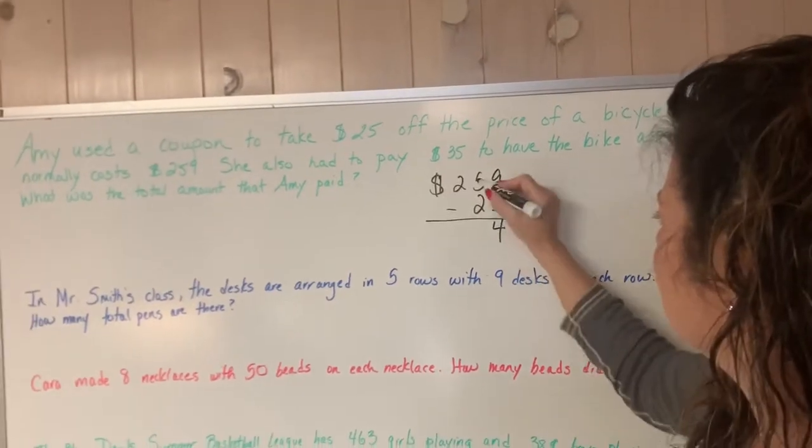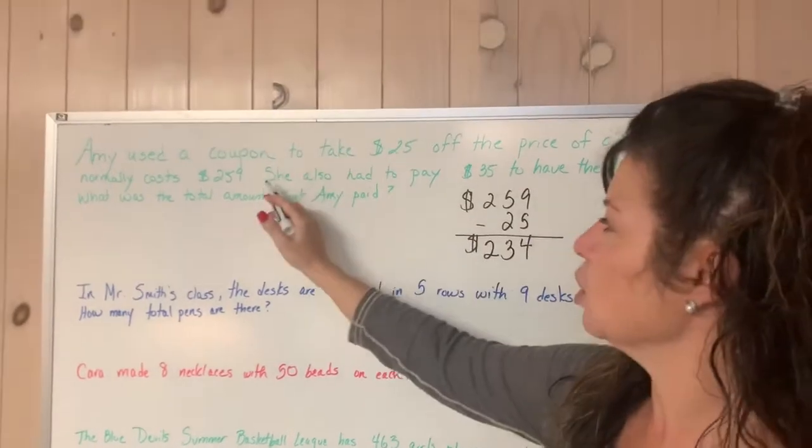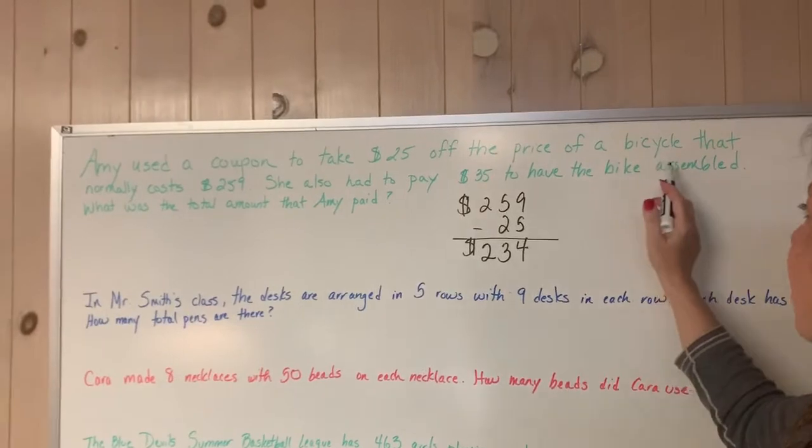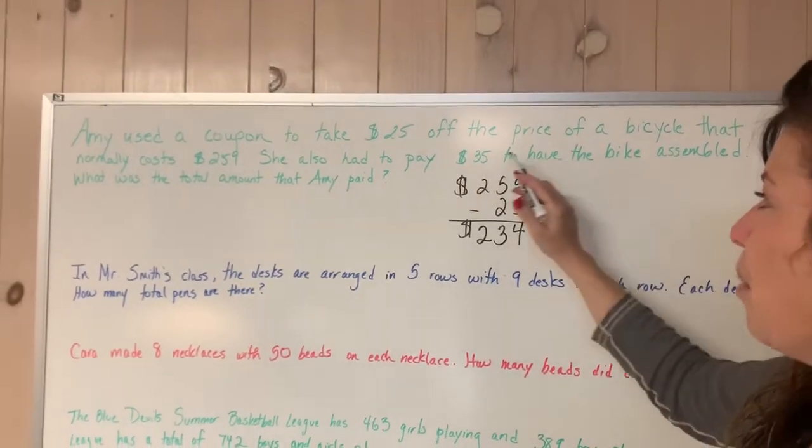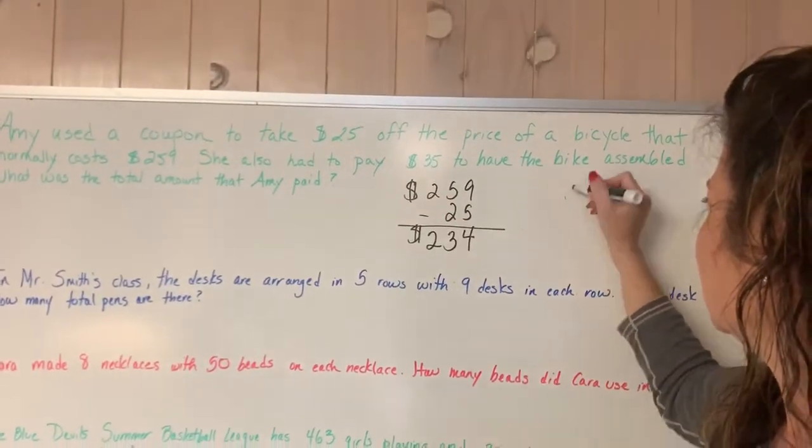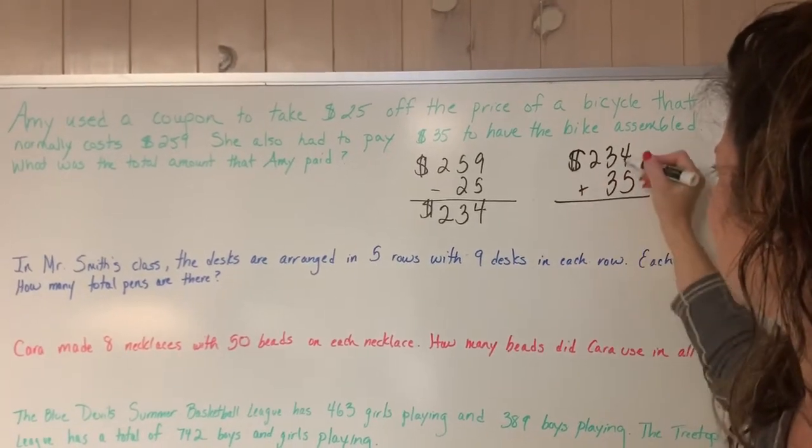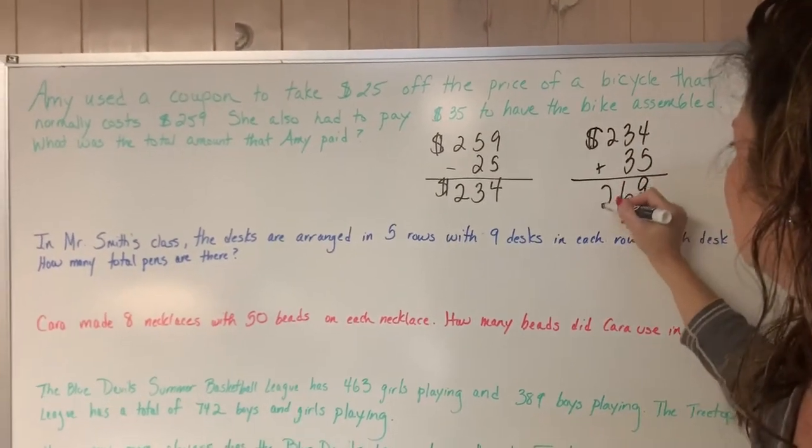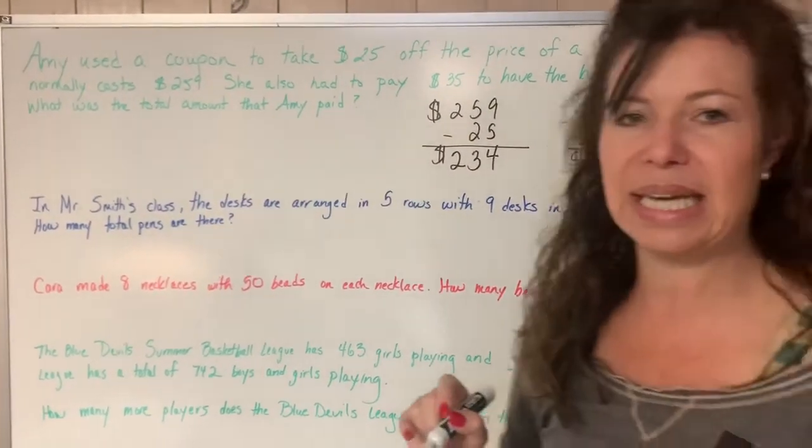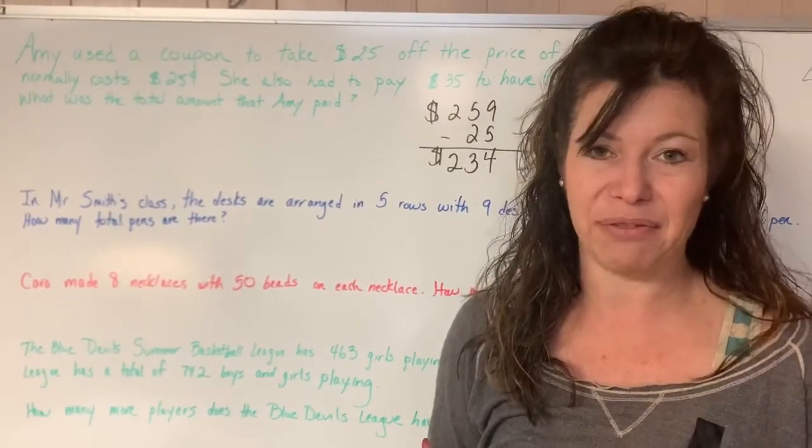9 minus 5 is 4. 5 minus 2 is 3. 2 minus 0 is 2. But then I have more to read. She also had to pay $35 to have the bike assembled. So now I know that I have to add $35 because I had to pay it. So I'm going to take the $234 and add the $35. And I would get $269. So Amy paid $269. I would write the sentence, but because this is a video, I'm just going to do the math for now.